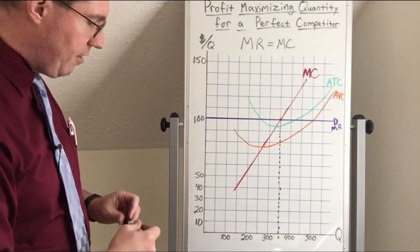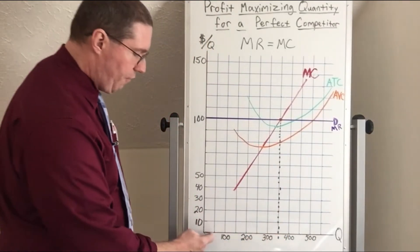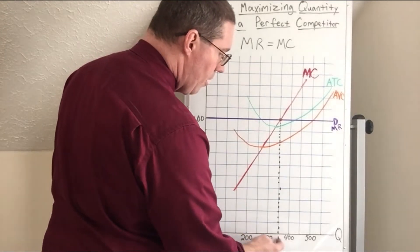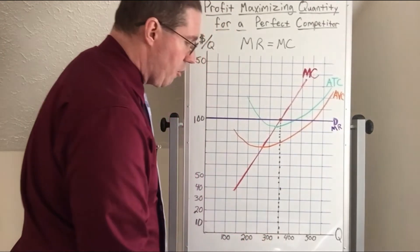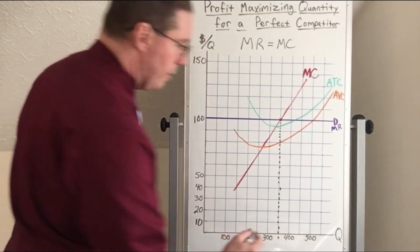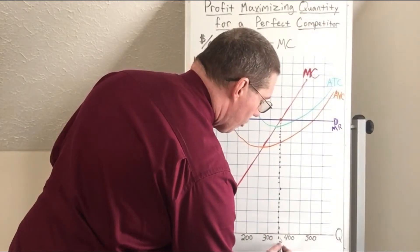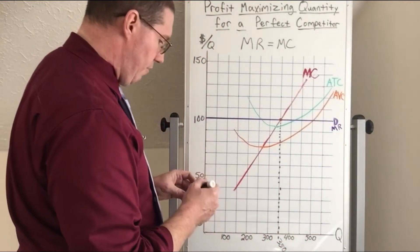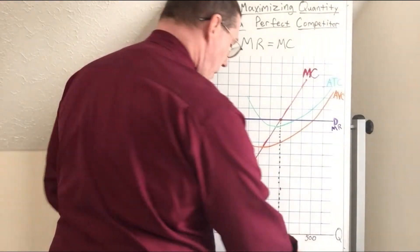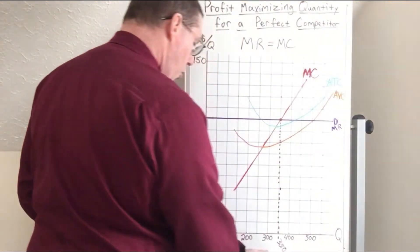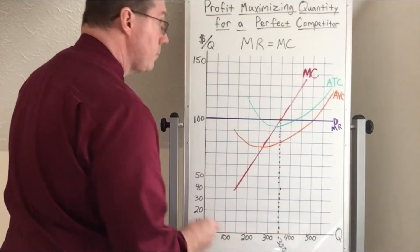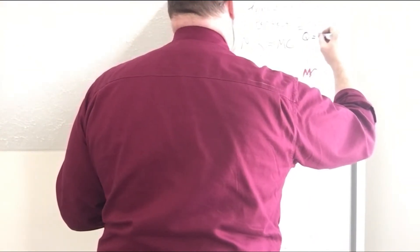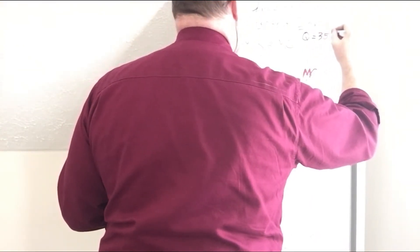The quantities are going up by 50 at a time: 50, 100, 150, 200, 250, 300, 350. So our profit maximizing quantity here is going to be 350 units. Let me write that down — quantity is going to be 350.